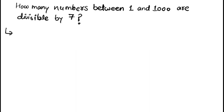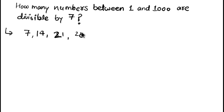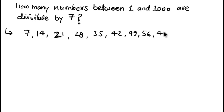Let's see how I find the required number. First, I just write the multiples of seven — like the table of seven: seven, fourteen, twenty-one, twenty-eight, thirty-five, forty-two, forty-nine, fifty-six, and seventy, up to infinite.